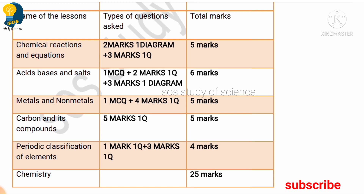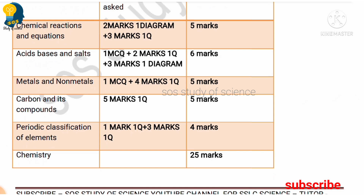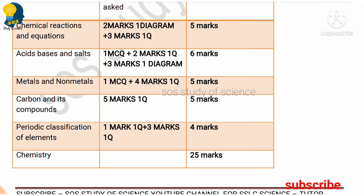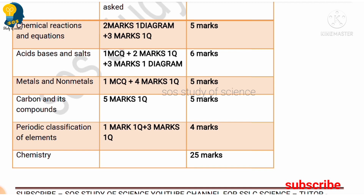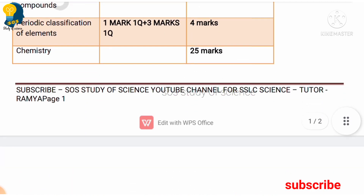Moving to Carbon and Its Compounds — they have given only one question for five marks, so the total weightage is five marks for this lesson. For Periodic Classification of Elements they have given four marks, out of which there is one one-mark question and one three-mark question. The total weightage for Chemistry is 25 marks. Now let us check the Physics part.